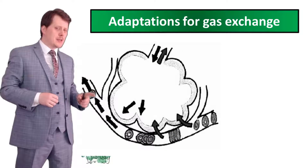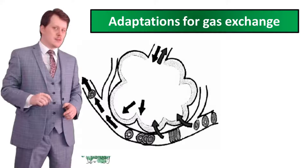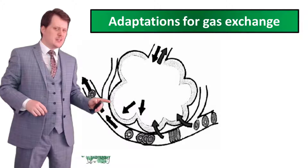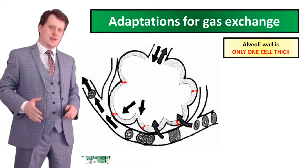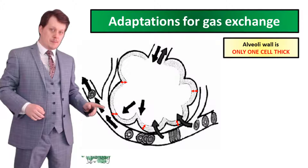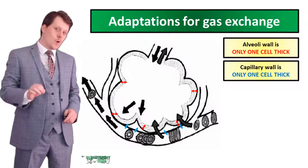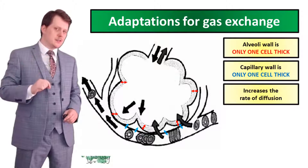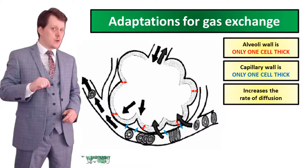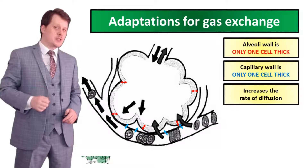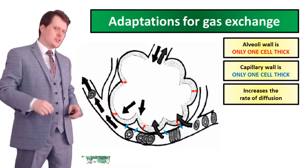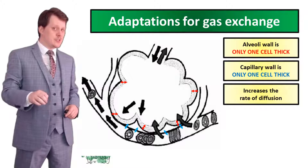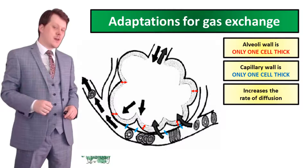The alveoli and capillary are well adapted for gas exchange. The alveoli wall is only one cell thick, and the capillary wall is only one cell thick. This minimises the distance that the gases have to diffuse over, increasing the rate of diffusion. The oxygen which has entered the red blood cells is then transported to the tissues for aerobic respiration.